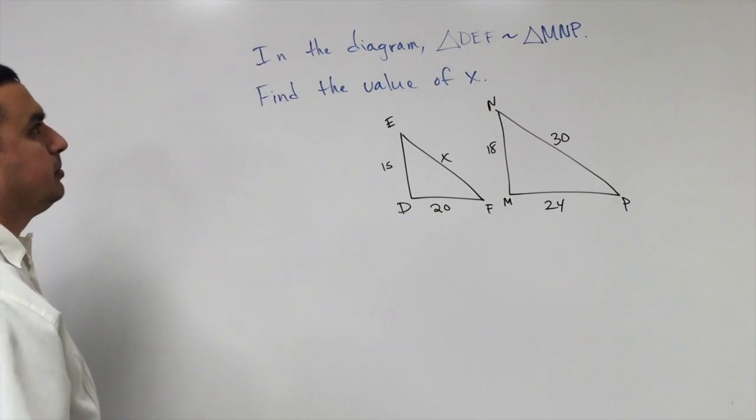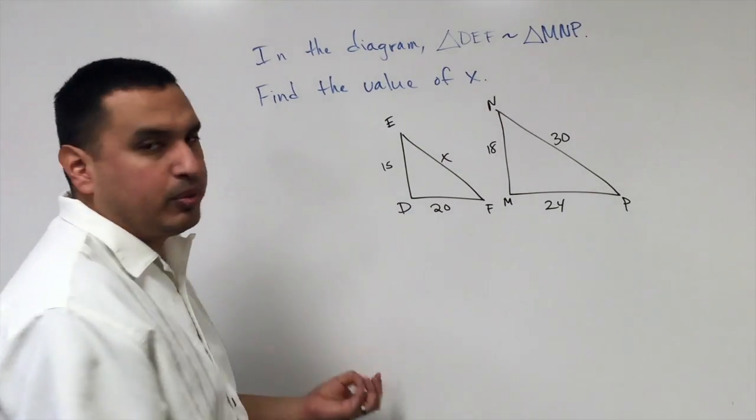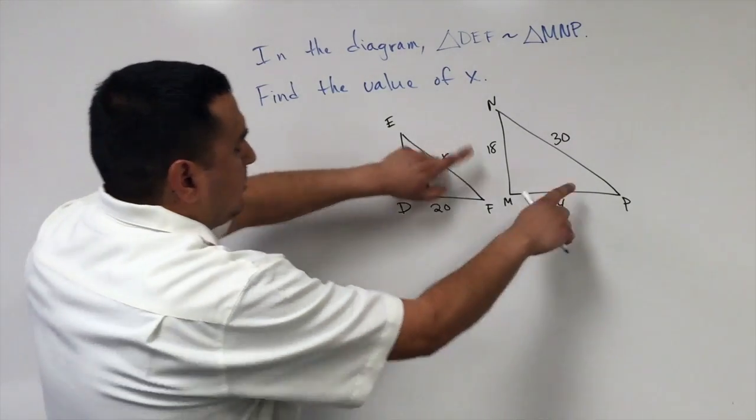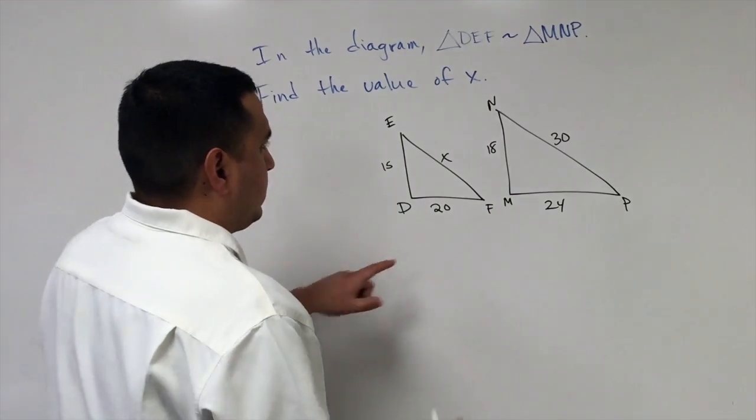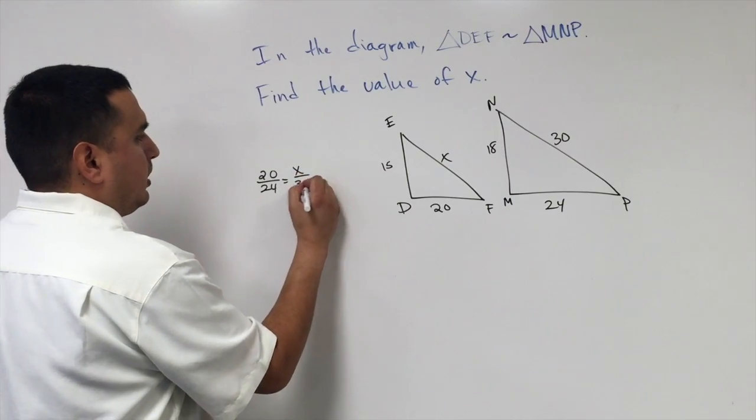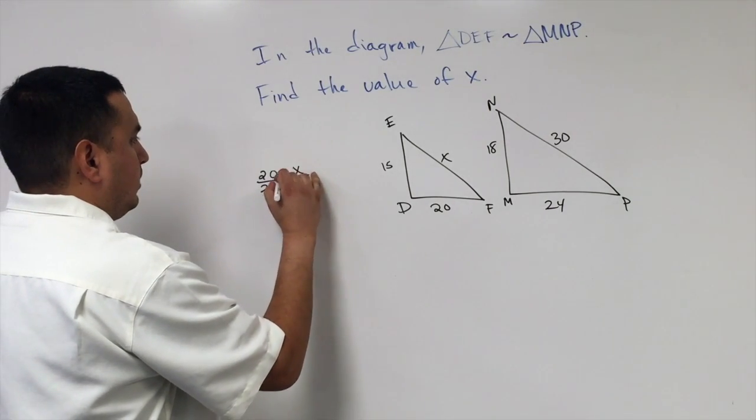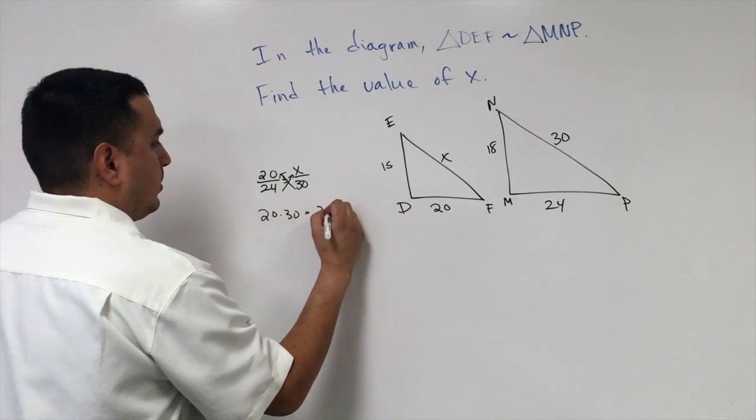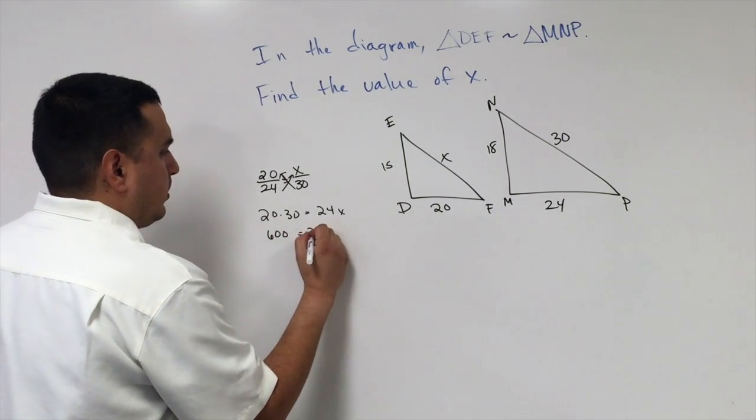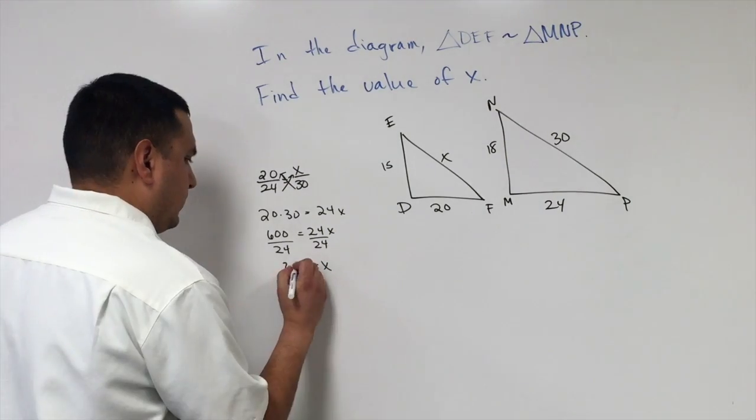Now let's look at a problem with a missing side. Because they are similar, I can set up a proportion to solve for X. Since I have all three sides labeled, I can pick two pairs. Let's use 20 and 24. So 20 is to 24 as X is to 30. Using cross products, 20 times 30 equals 24 times X. This gives 600 equals 24X. Dividing both sides by 24, X equals 25.